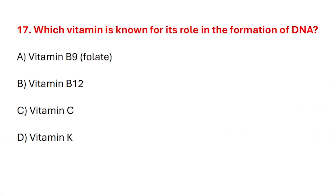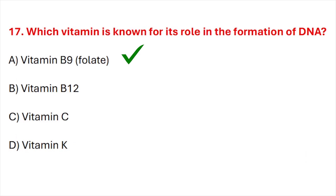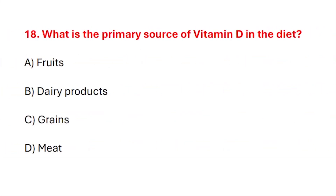Question number 17. Which vitamin is known for its role in the formation of DNA? Question number 18. What is the primary source of vitamin D in the diet? Correct answer is option B: Dairy products.